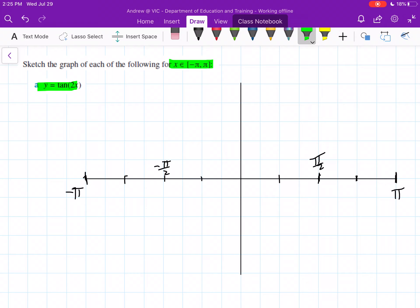tan of 2x over negative π to π. You'll see all I've done already is drawn our x-axis here, negative π to π, so that's going to be where our graph is going over.